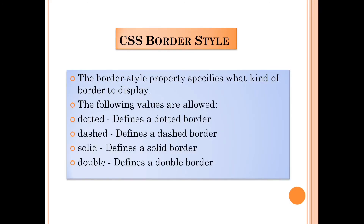The border-style property specifies what kind of border to display. The following values are allowed: dotted — defines a dotted border; dashed — defines a dashed border, so it will appear as dash-dash-dash; solid — defines a solid border in a thick line; double — defines a double line border.